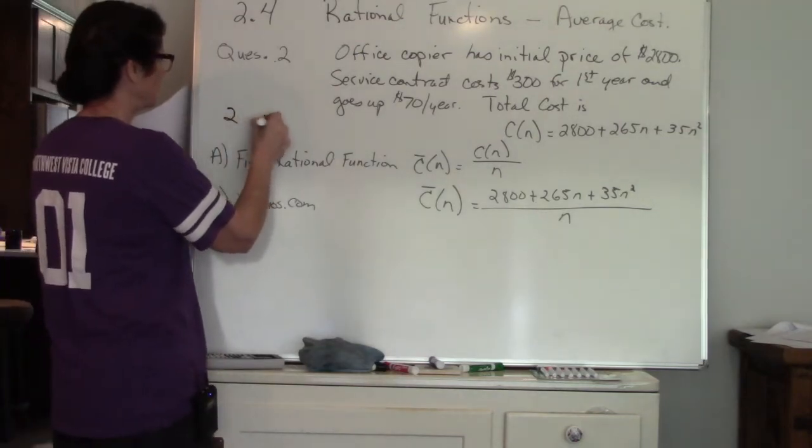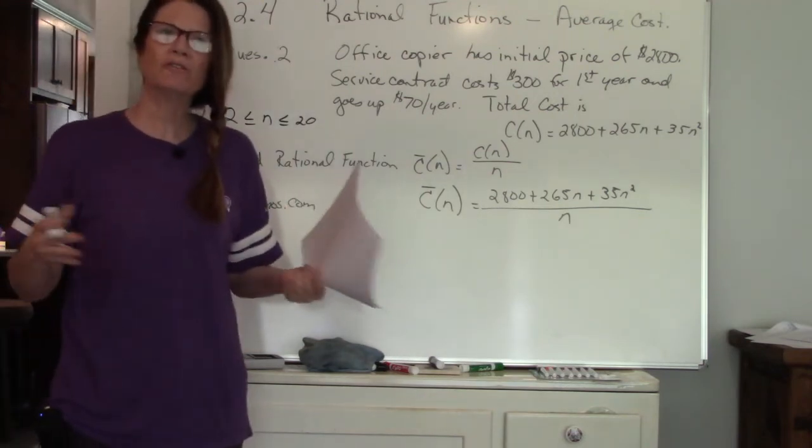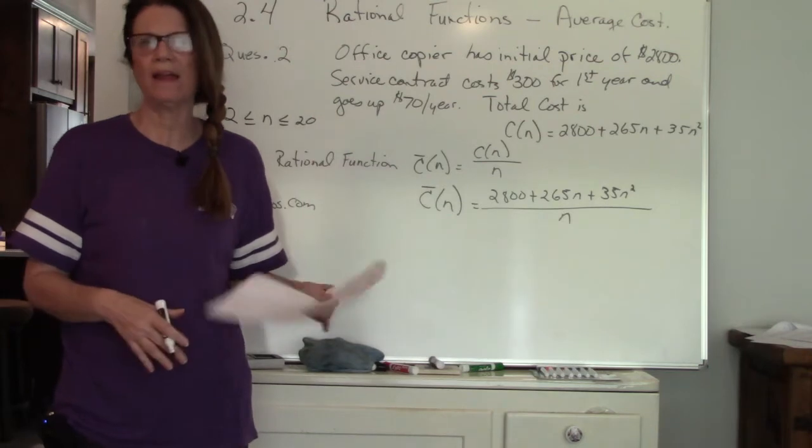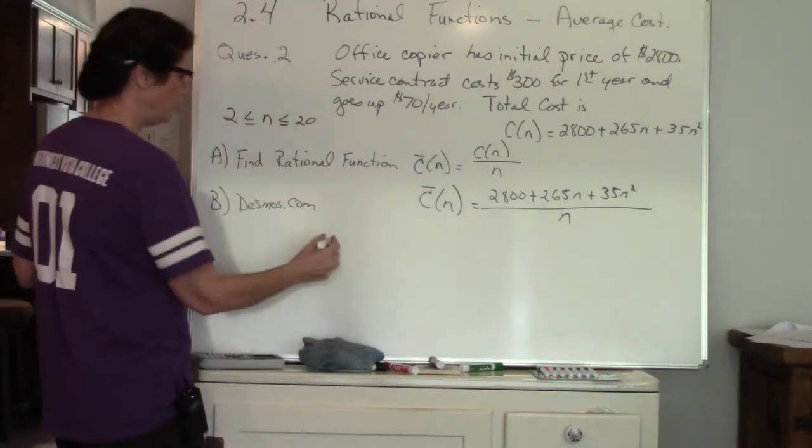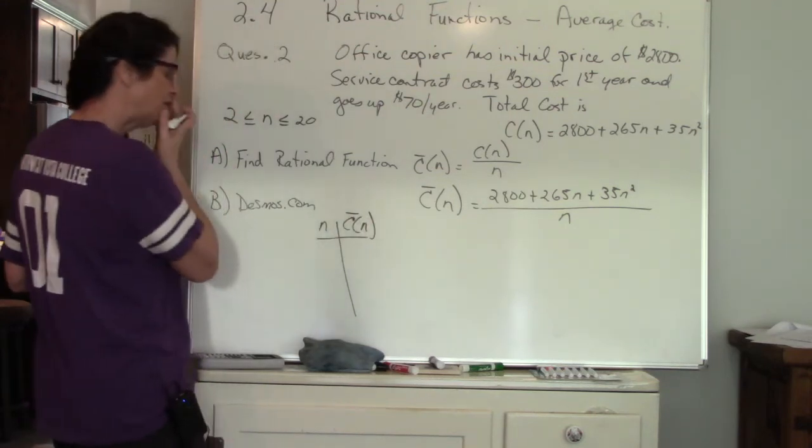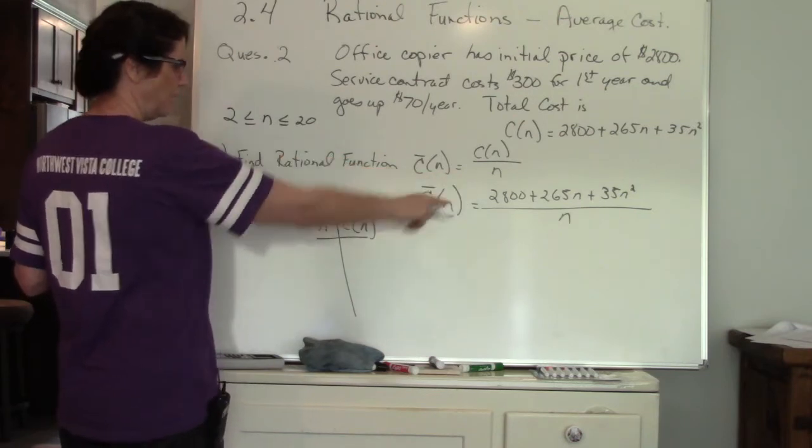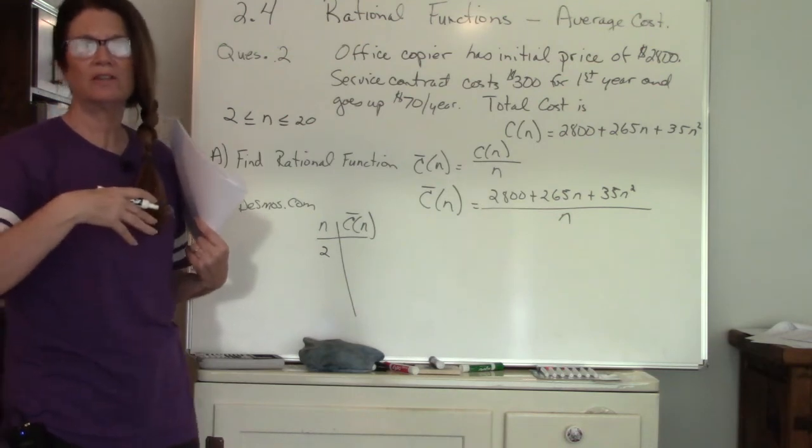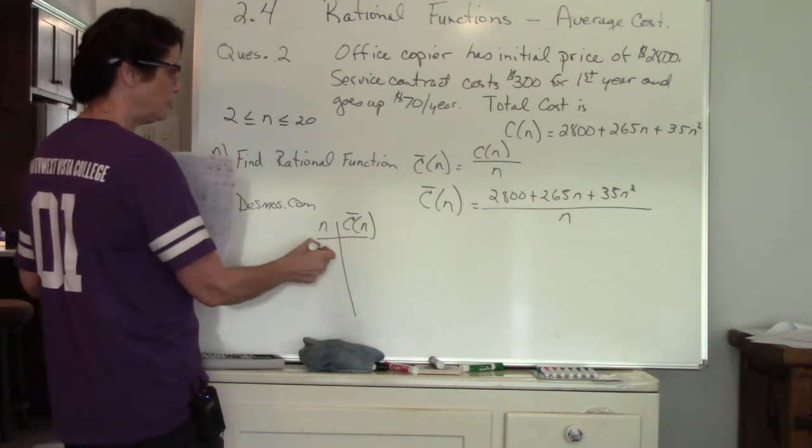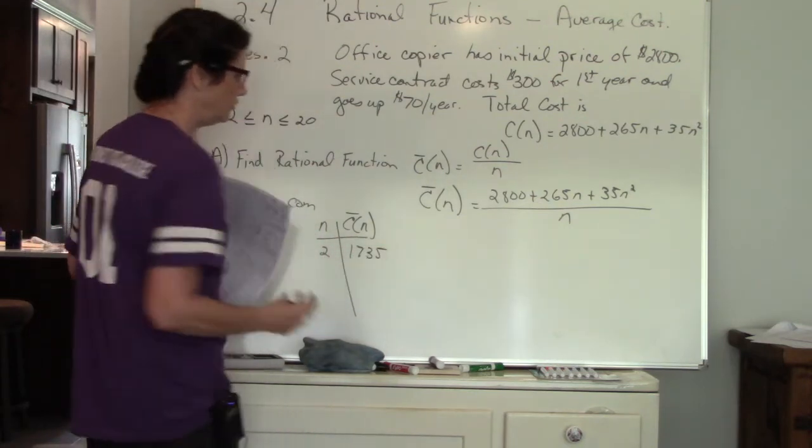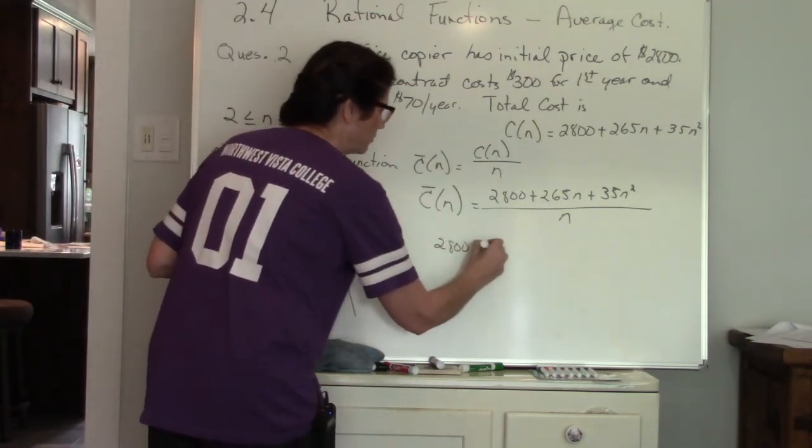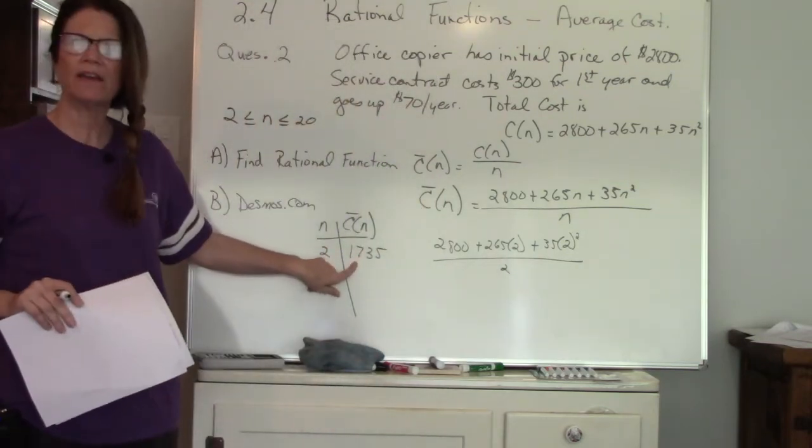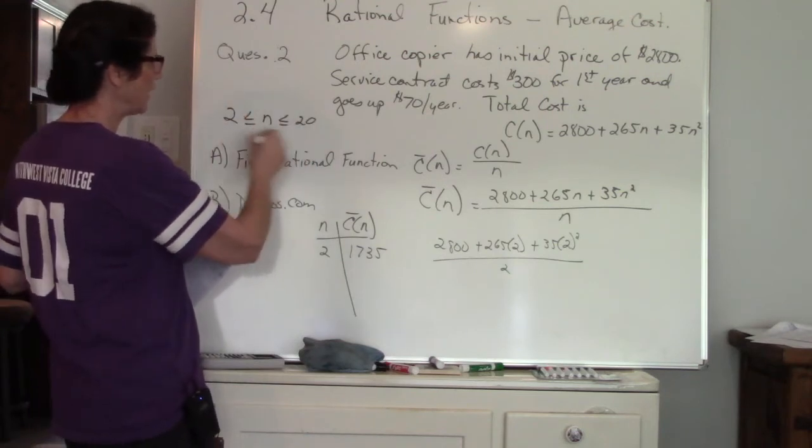My domain is between 2 and 20, so my number of years is between 2 and 20. I'm looking for my average cost between year 2 and year 20, over all of those 18 years. I have my function, I have my table of values. I'm going to start at 2. When my number of years is 2 my cost was 1735. All I did is I did 2800 plus 265 times 2 plus 35 times 2 squared all divided by 2.